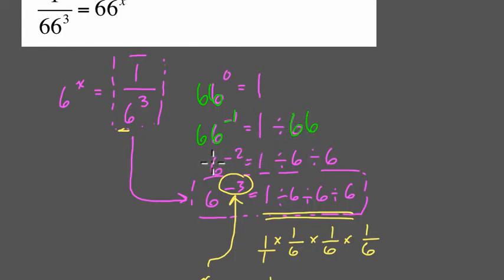And then 66 to the negative 2 being 1 divided by 66 divided by 66. And then 66 to the negative 3 as 1 divided by 66 divided by 66 and 66.